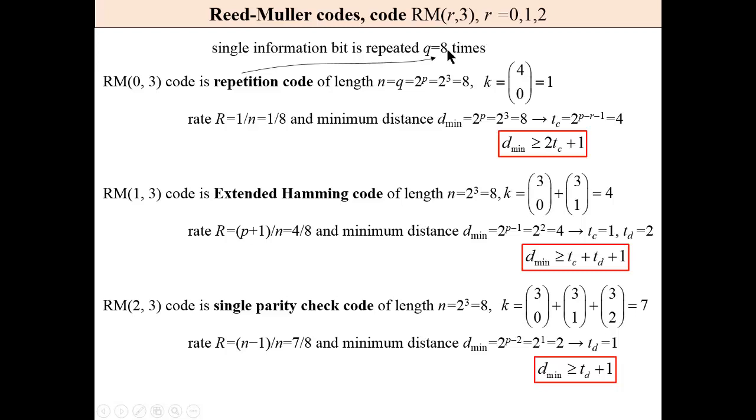Obviously, the minimum distance is described by this formula. When we say that this code may correct up to 4 errors, if R is 1, then we have an extended Hamming code, self-dual extended Hamming code.